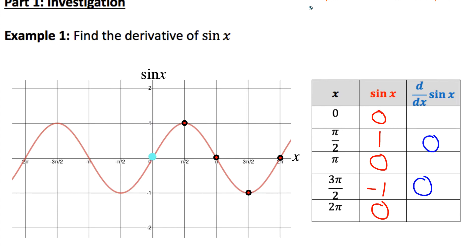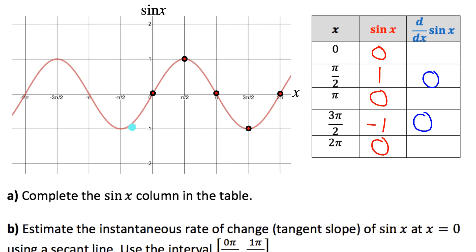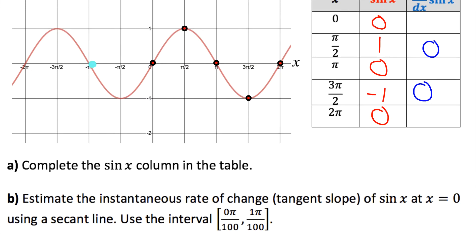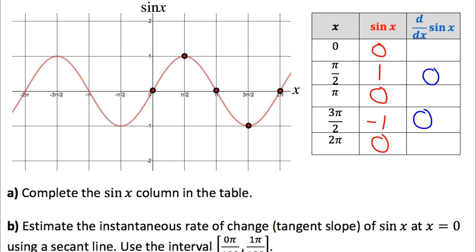But what about at x values of zero, pi, and two pi? To figure those out we're going to use an approximation technique. To find the slope of the tangent line at a point, we're going to use the slope of a secant line that really closely resembles the slope of that tangent line. Let me show you what I mean over in Desmos.